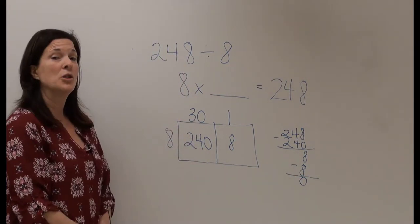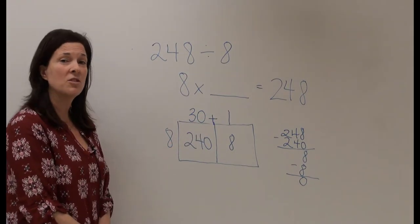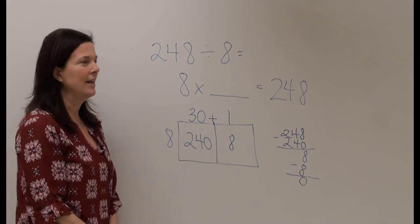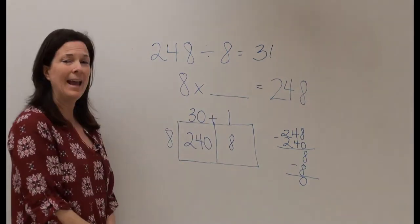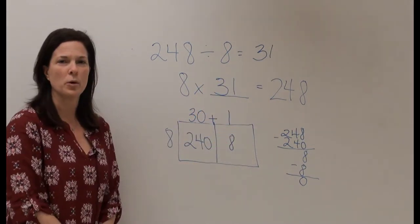So I'm going to add my two factors, 30 plus 1, which gives me 31 rows. So 248 divided by 8 equals 31, and 8 times 31 equals 248.